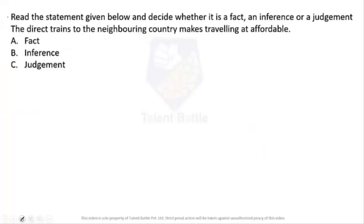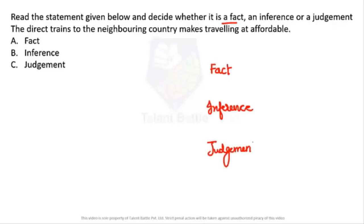The next question: read the statement and decide whether it is a fact, an inference, or a judgment. Capgemini especially asks these kinds of questions. A fact is something that can be easily verified — using figures, numbers, statistics, or universal truths. For example, 'a cyclone happened in 2019' can be verified with data. 'The sun rises in the east' is a universal fact.